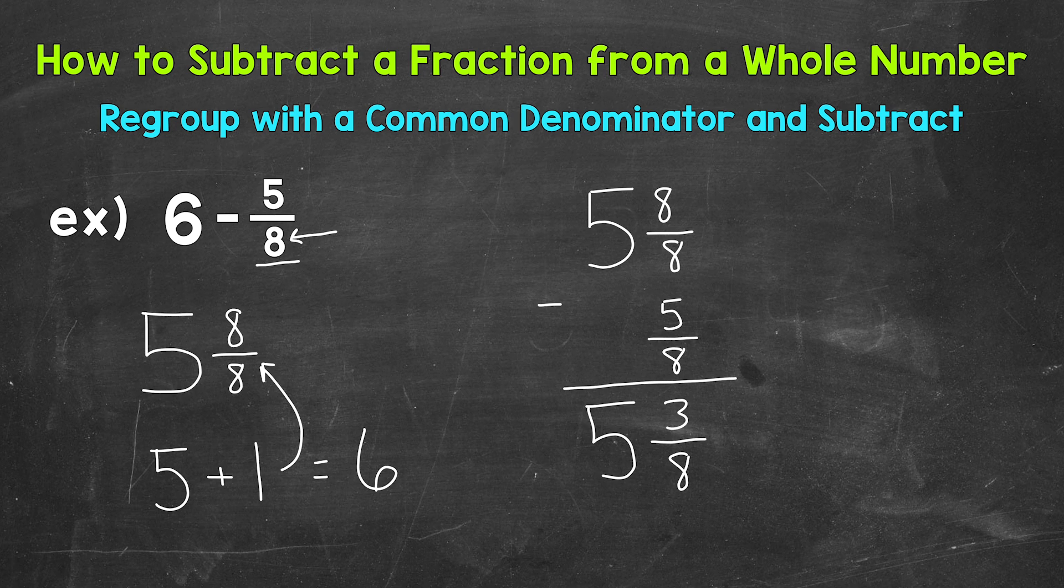We can always look to see if we can simplify the fractional part of a mixed number. 3 eighths is in simplest form. The only common factor between 3 and 8 is 1. So this is done and in simplest form.